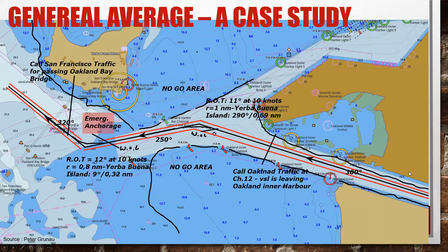We can see the planned route: the ship will be outbound, then make a turn, another turn, passing the Oakland Bay Bridge, and then to the pilot station. The no-go areas are defined and marked, cross-track errors are marked, rate of turn and wheel-over lines are indicated where the ship has to turn. The necessary information on when to call San Francisco traffic or Oakland Bay traffic are included, and the emergency anchorage if something goes wrong is also marked.